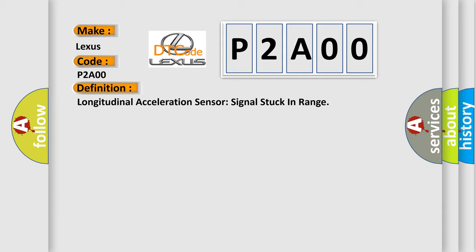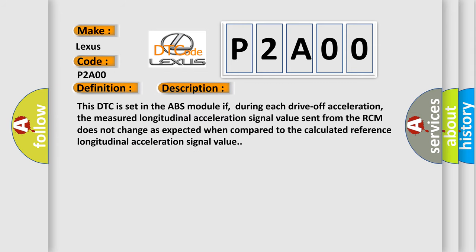And now this is a short description of this DTC code. This DTC is set in the ABS module if, during each drive-off acceleration, the measured longitudinal acceleration signal value sent from the RCM does not change as expected when compared to the calculated reference longitudinal acceleration signal value.